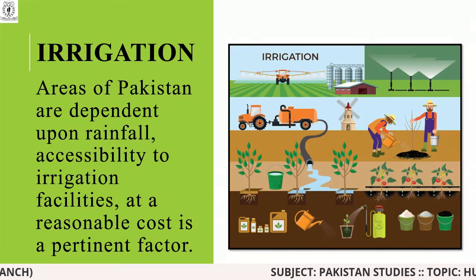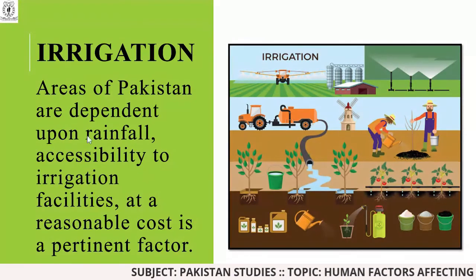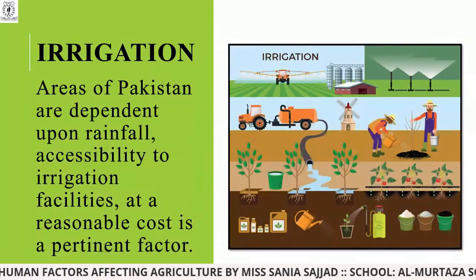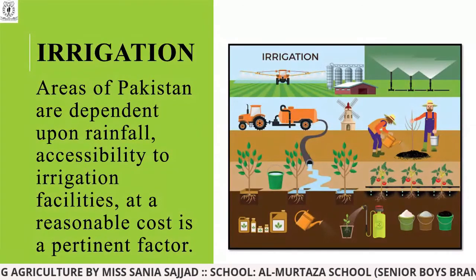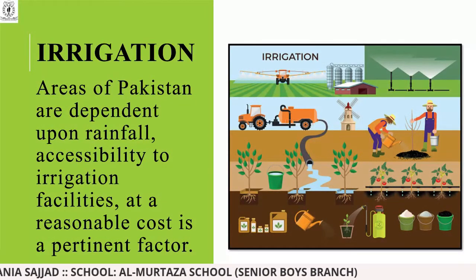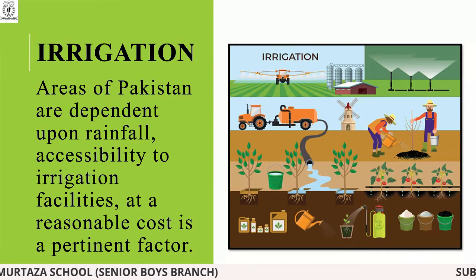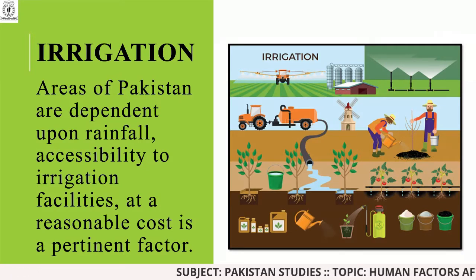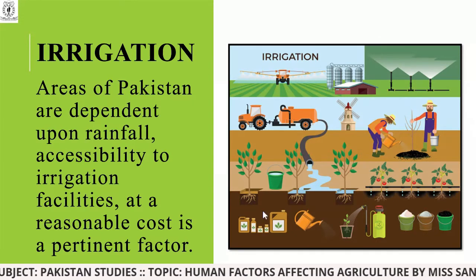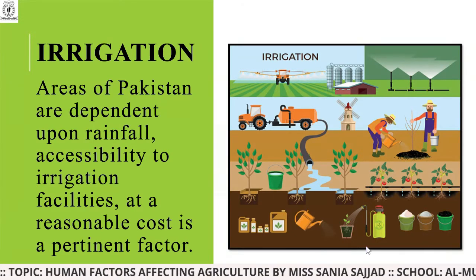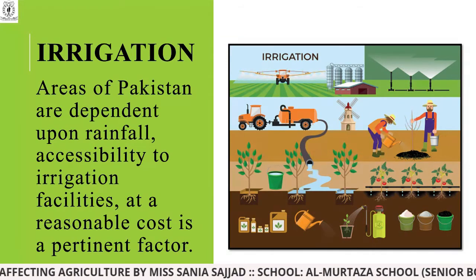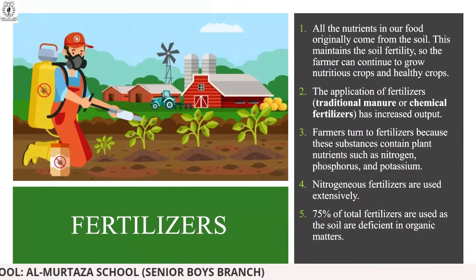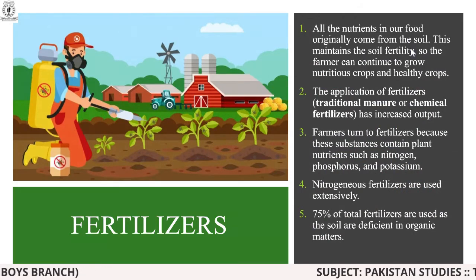Large areas of Pakistan are dependent upon rainfall for irrigation. If there is adequate rainfall it benefits farmers, but if not, it results in negative consequences. You can see the picture on the right side showing the various irrigation methods and how water is transported to agricultural land.